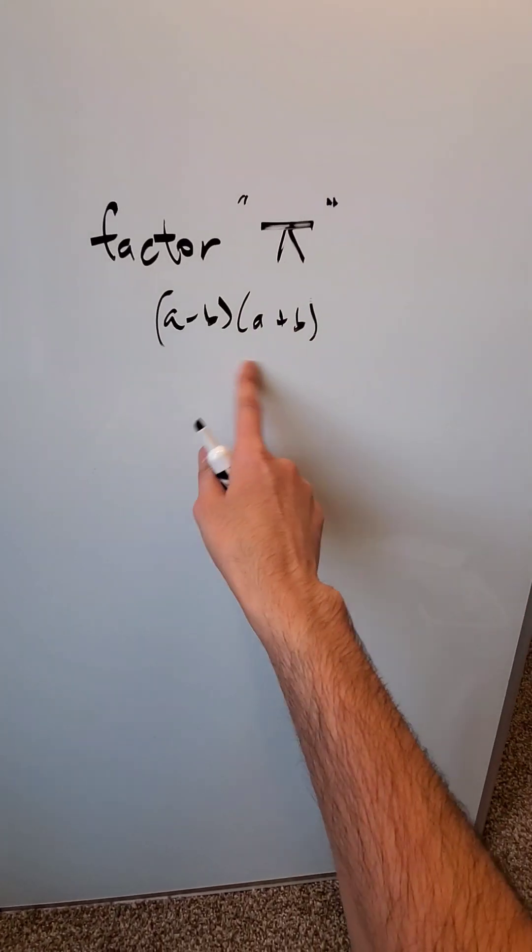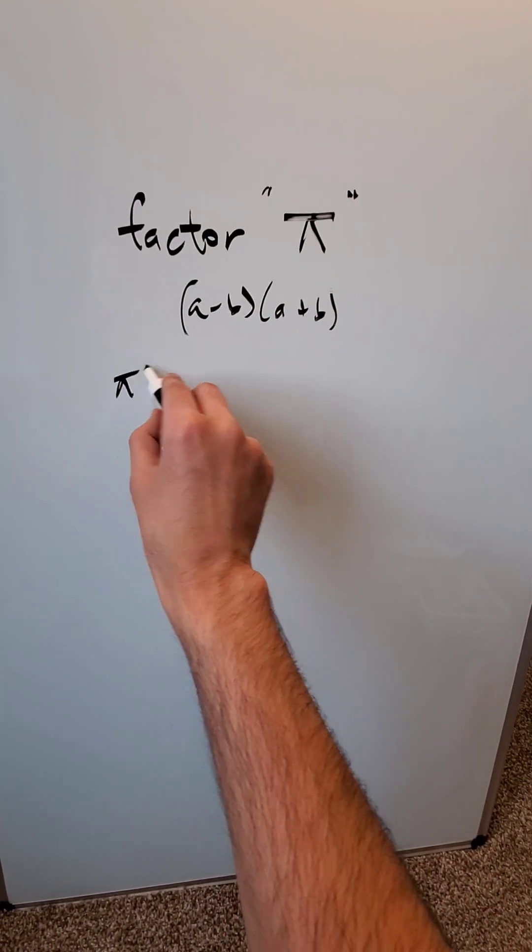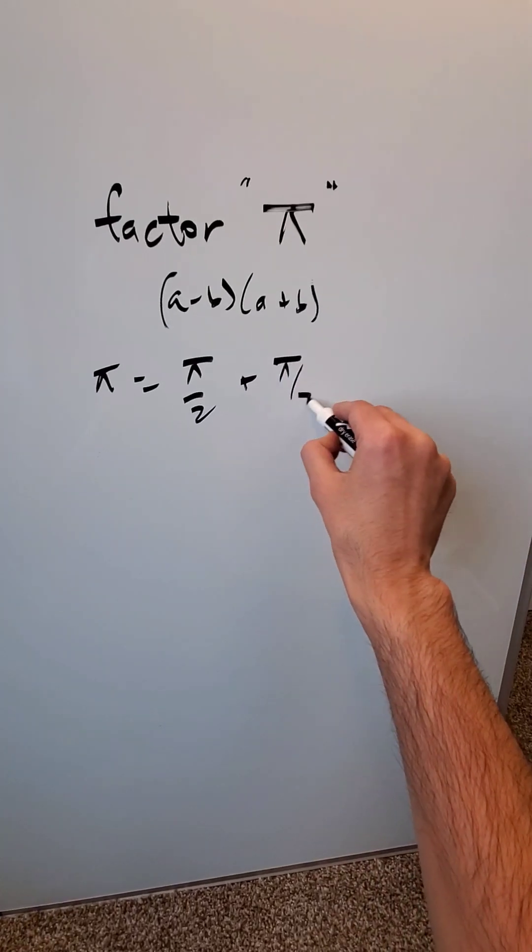Is there a way to determine the factors of π in the form (a minus b) times (a plus b)? Sure. Think of π as π/2 plus π/2.